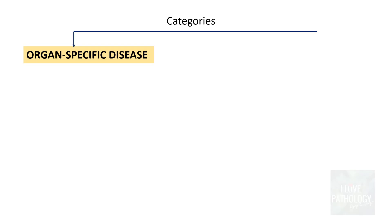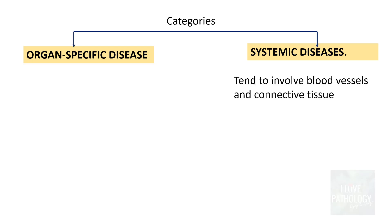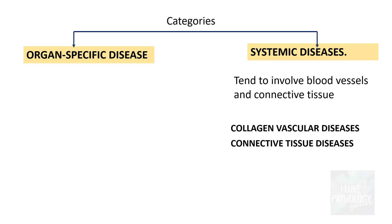Autoimmune diseases can be classified into organ-specific and systemic diseases. Systemic diseases tend to involve the blood vessels and connective tissue, which is why they are referred to as collagen vascular diseases — 'collagen' referring to connective tissue involvement and 'vascular' referring to blood vessels.